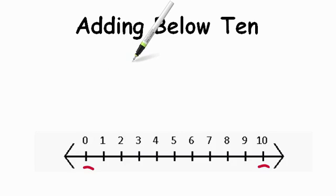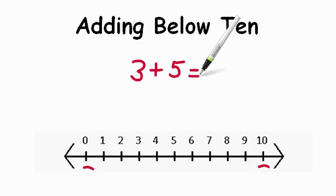For instance, if I gave you the number 3 and I wanted to add 5 to it, first thing we do is look to see which is the bigger number. Now between 3 and 5, 5 is the bigger number.